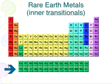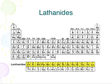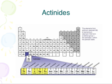Then we take a look at these elements down here, pulled out from the rest of the periodic table — these are known as the rare earth metals. The rare earth metals can also be subdivided: the top row is called the lanthanide series, and the bottom row is called the actinide series. And that covers the families of the periodic table.